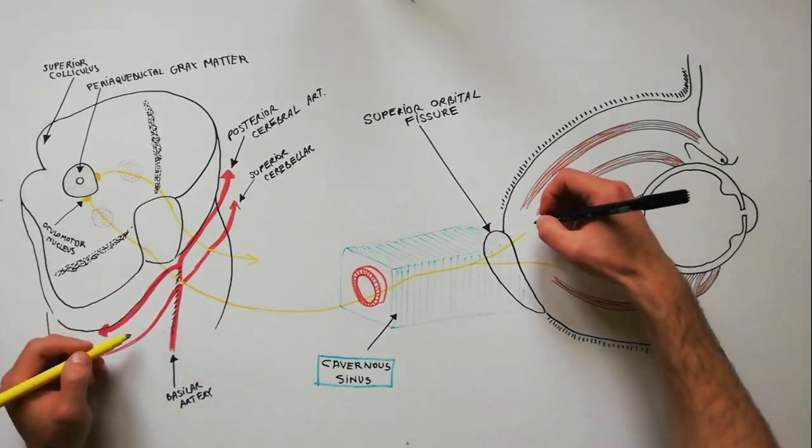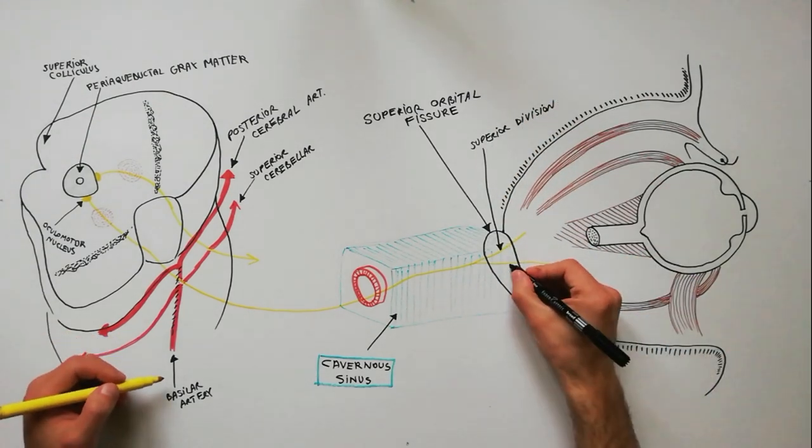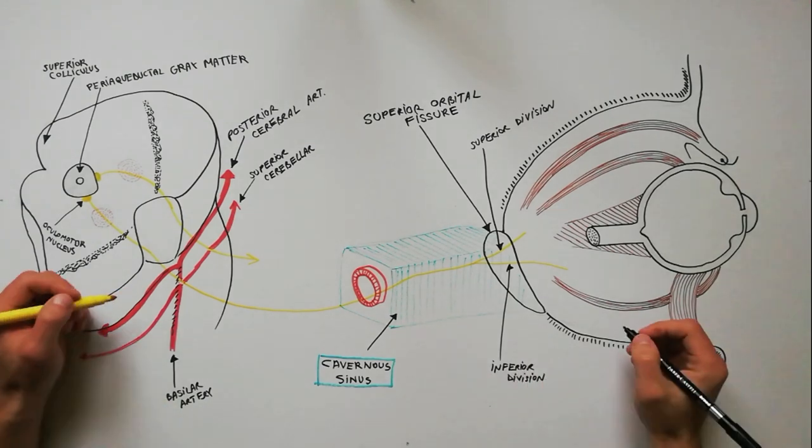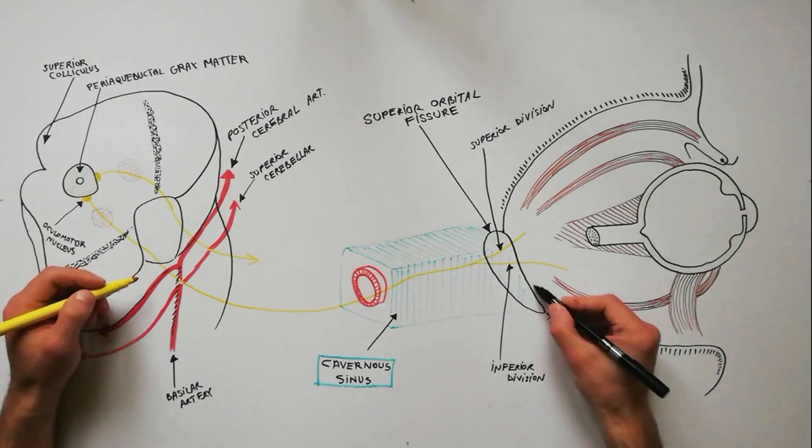Before leaving the lateral wall of the cavernous sinus, the oculomotor nerve splits into a superior division and an inferior division. These two divisions enter the orbit via the superior orbital fissure.